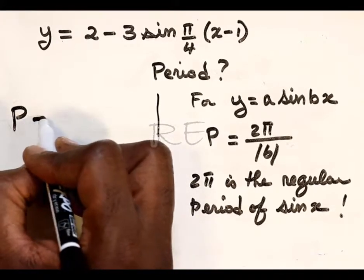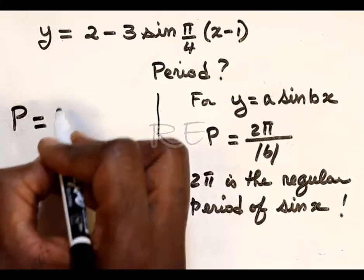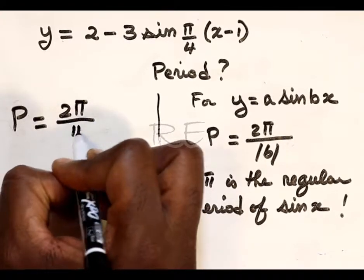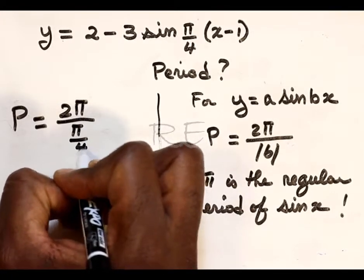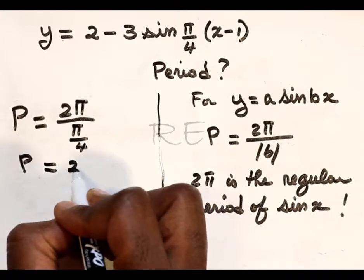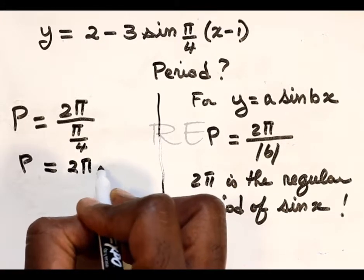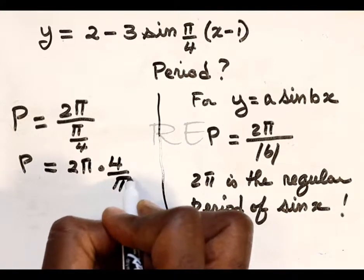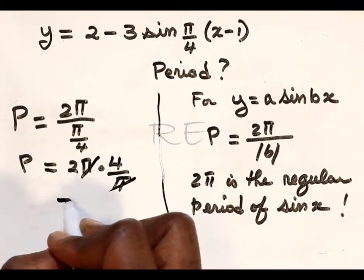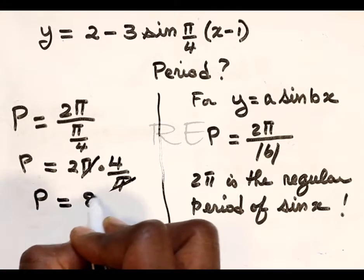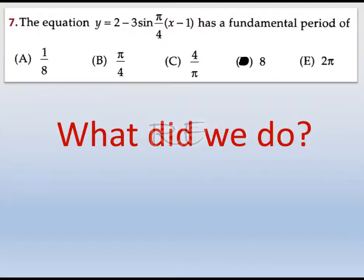So the x term in our equation, because it has a whole bunch of transformations, is played by x minus 1, and we have to divide 2π by π over 4 to get the period. So it's really 2π multiplied by the reciprocal. We cancel π, so it's 2 times 4, which is 8.